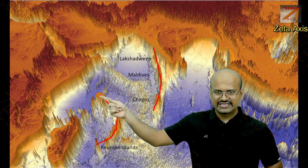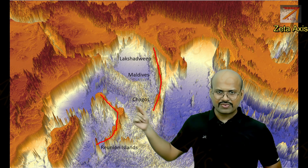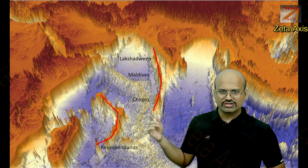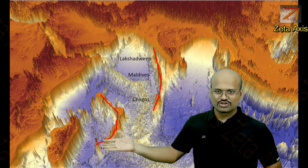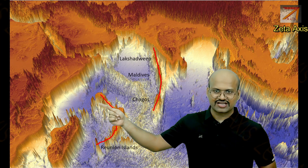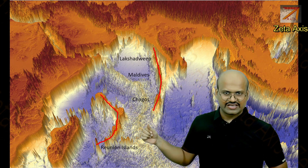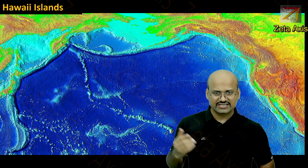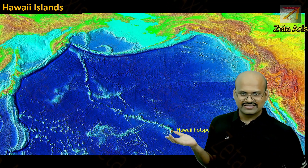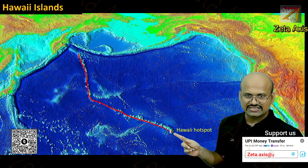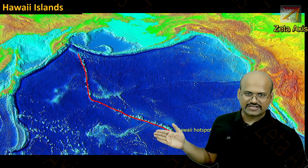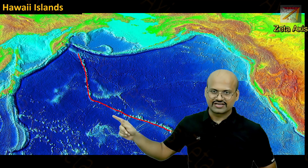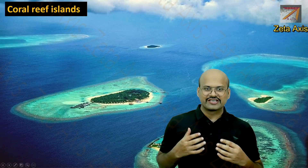The Reunion hotspot also created volcanic mountain chains formed after the Chagos Island group. Because this is on a different plate, we can see that the Mid-Atlantic Ridge is there and there is a boundary between our Indian plate and African plate. This plate may have moved in a different direction, which is why these islands are located here. These kinds of islands are common in different parts of the world. Here is another example — the Hawaiian hotspot — where we can see a similar mountain chain of volcanic mountains created in the Pacific Ocean as the Pacific plate moves in this direction.